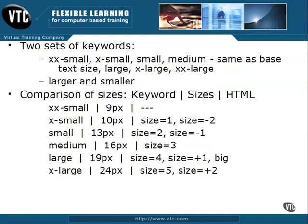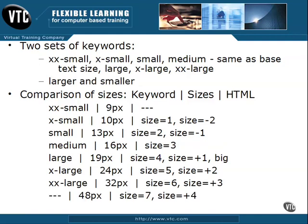Then we have x-large, which is 24 pixels, or size 5 or size plus 2. And then we have xx-large, which is 32 pixels, size 6, and size plus 3. Lastly, there is a value not represented in our keywords but available in HTML, which ends up being about 48 pixels — size 7 in HTML, and size plus 4. So that's a look at how our keywords measure up to an objective standard.